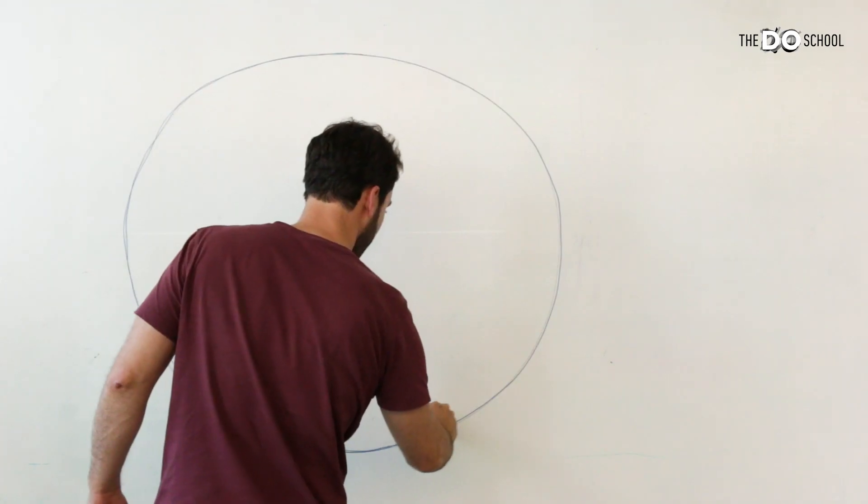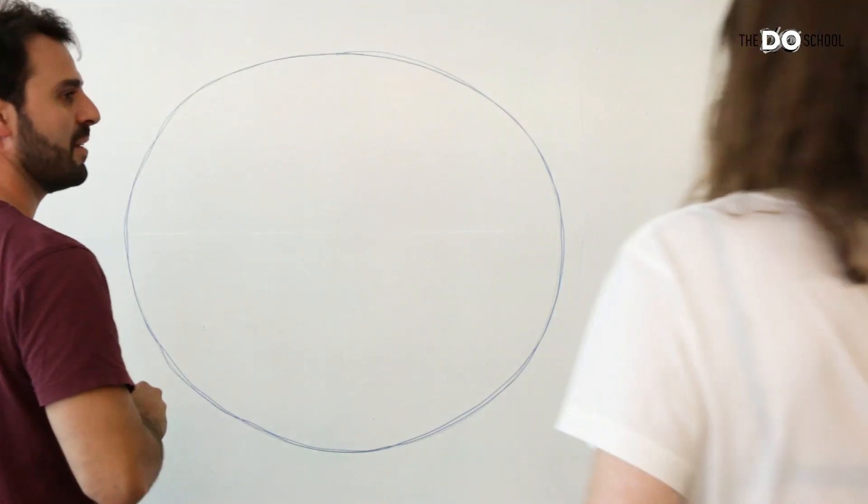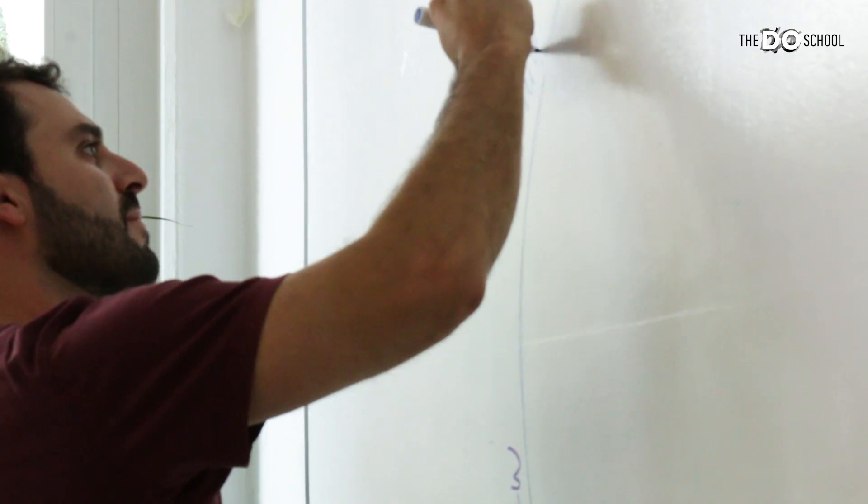You draw a circle on a whiteboard or on a flip chart and write the names of all people in the room around the circle.